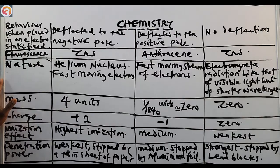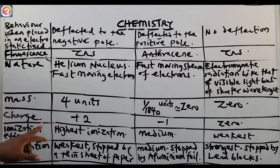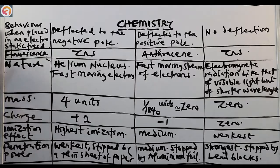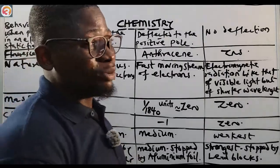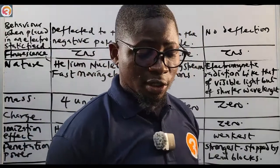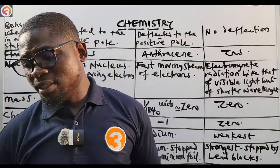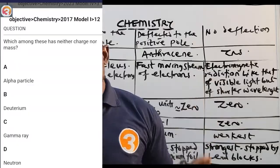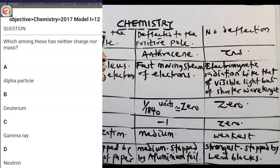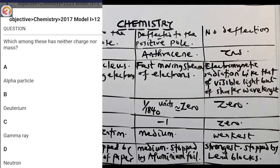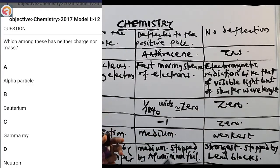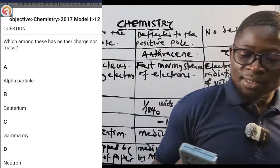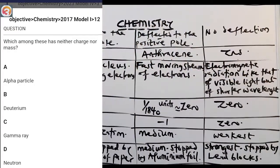So we've compared all three types of radiation — alpha, beta, and gamma — covering nature, mass, charge, ionization effect, penetration power, electrostatic field behavior, and fluorescence. Now let's go to the O3 School Jump app questions. 2017 question 12: which among these has neither charge nor mass? The answer is C — gamma ray, which has no mass and no charge.